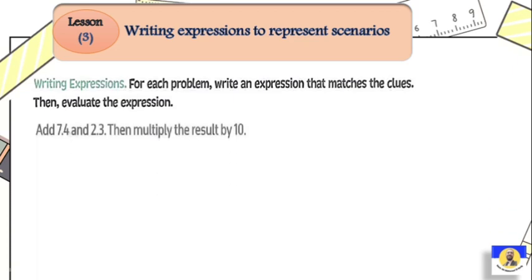For the first one, we have: add 7.4 and 2.3, then multiply the result by 10. So we put the addition inside parentheses first, then multiply by 10: (7.4 + 2.3) × 10.